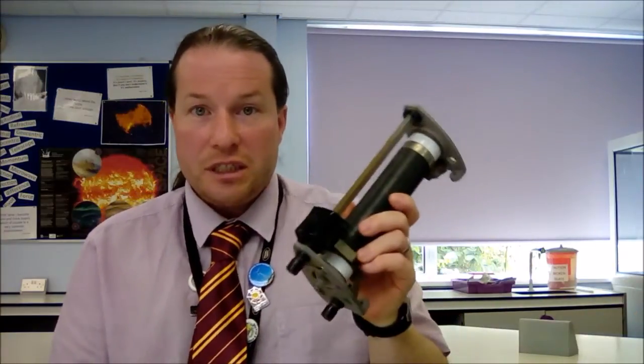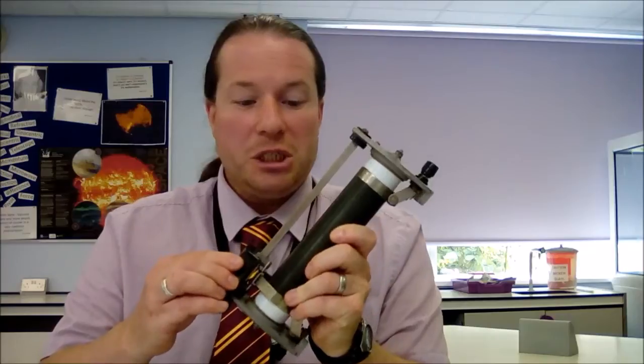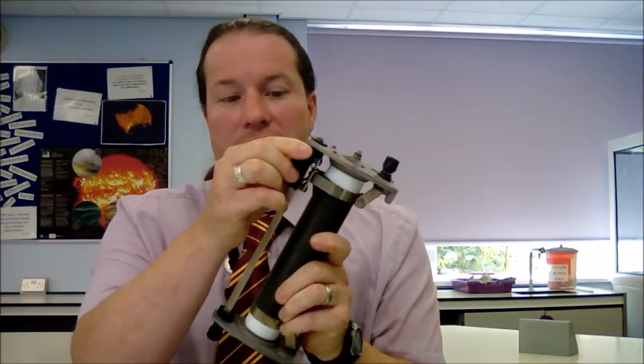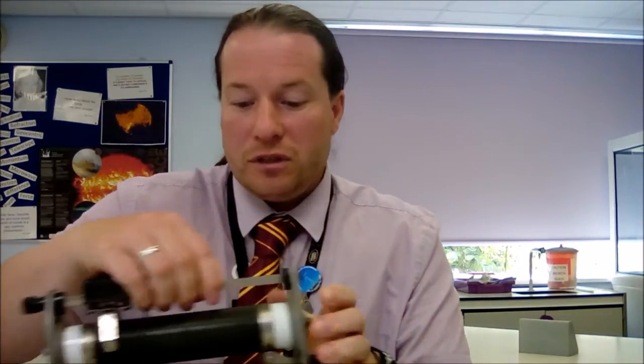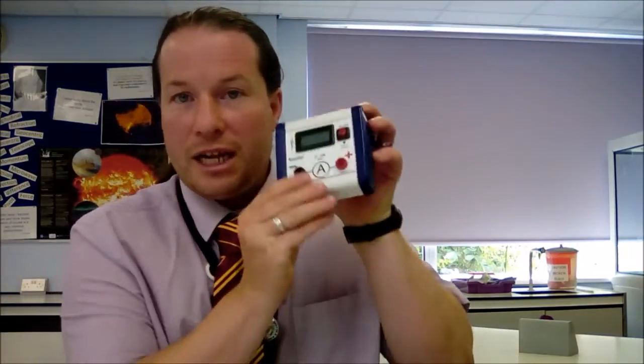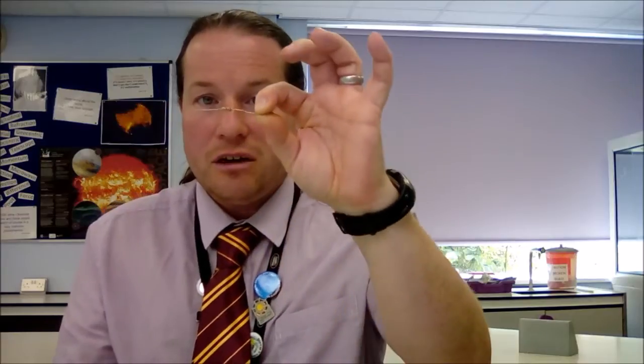The equipment that we need: we're going to need a power source, in this case we've got some cells, or you could use a power supply. You need a variable resistor, also known as a rheostat. We can change the resistance of this by sliding it up and down, which changes the length of the piece of wire, giving us a different resistance. We'll need an ammeter for measuring the current, a voltmeter for measuring the voltage, and we're going to be measuring the resistance of our fixed resistor. This is our ceramic resistor, a tiny little resistor.